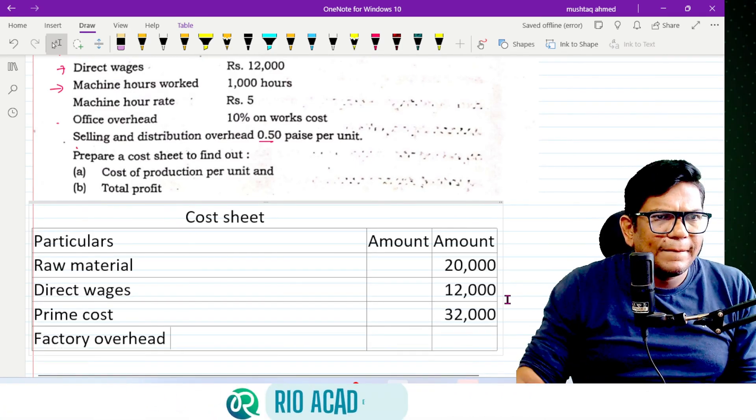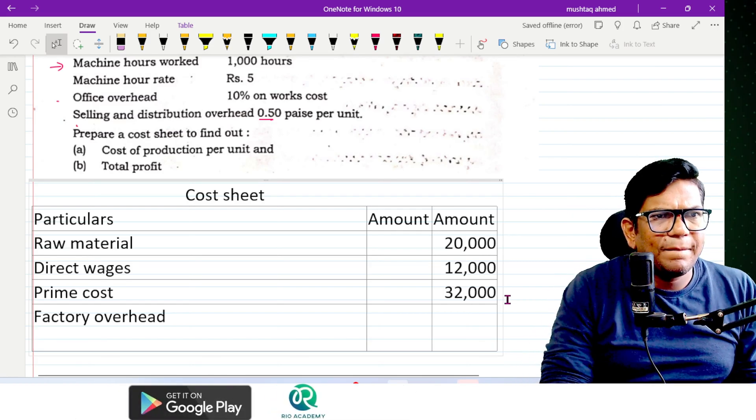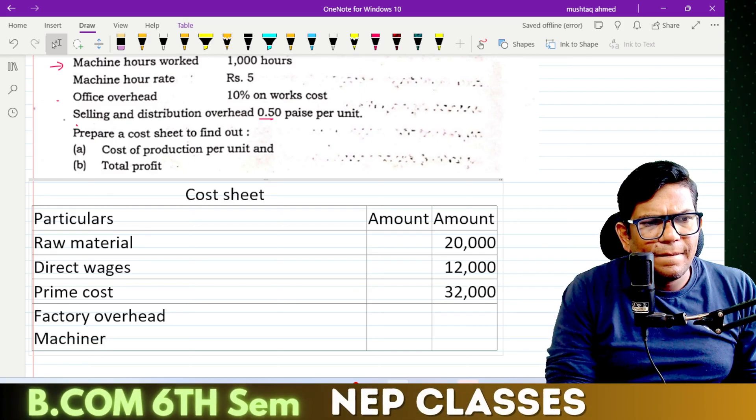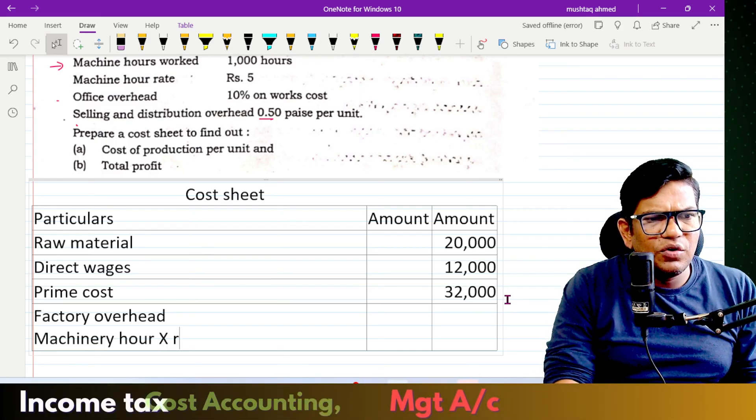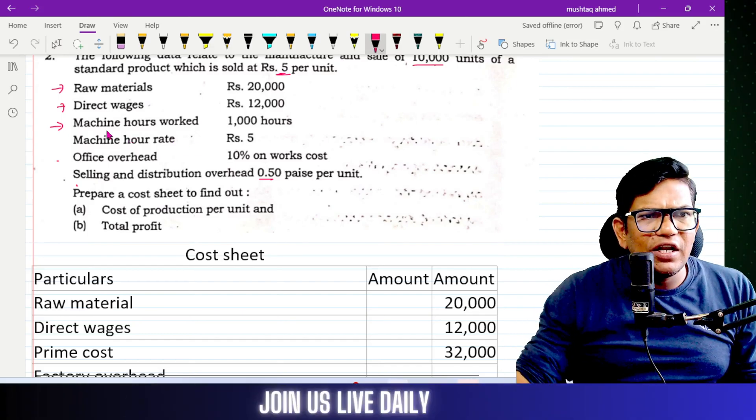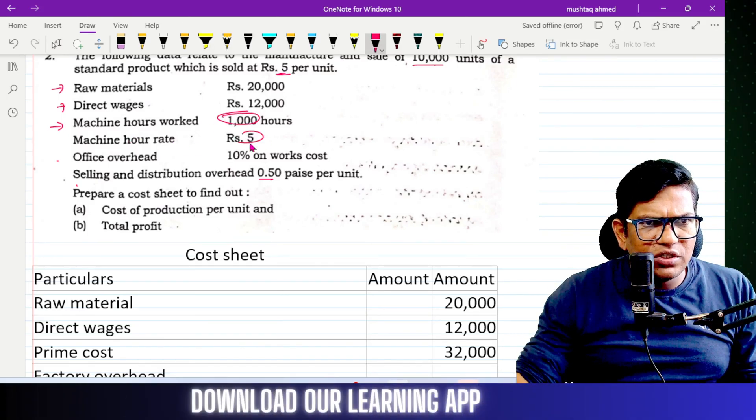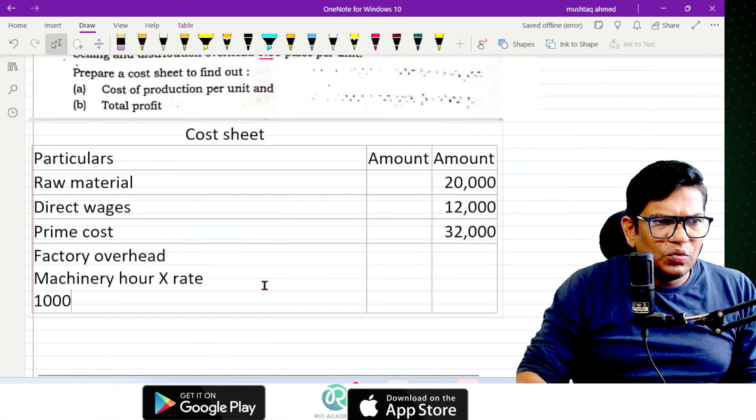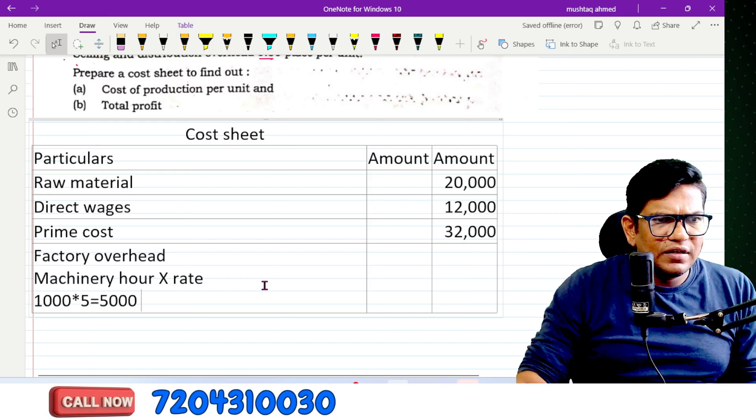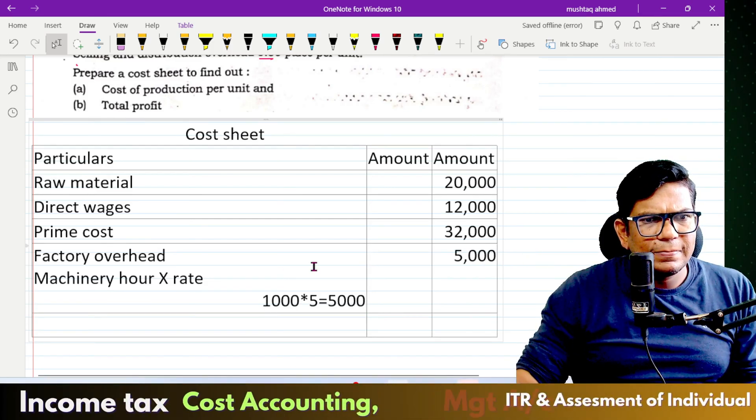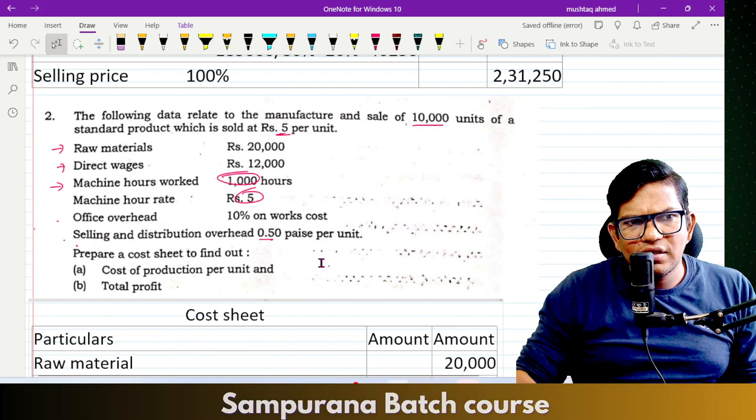Next is factory overhead. Machine hours times rate: machine hours times rate equals 1,000 into 5, which gives us 5,000.